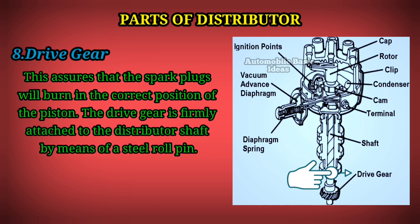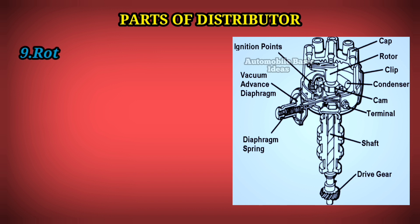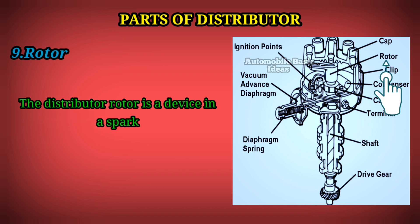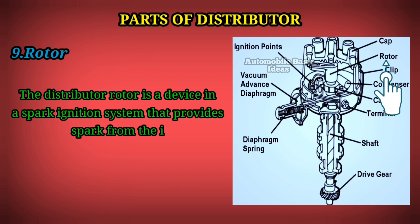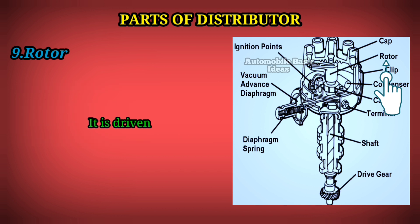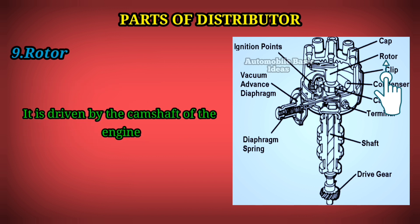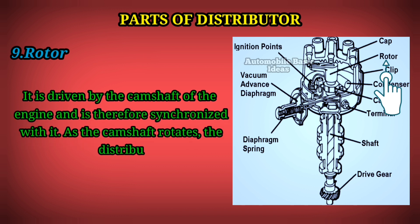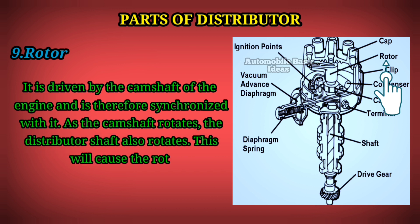9. Rotor: The distributor rotor is a device in a spark ignition system that provides spark from the ignition coil for proper contact inside the distributor cap. It is driven by the camshaft of the engine and is therefore synchronized with it. As the camshaft rotates, the distributor shaft also rotates, causing the rotor attached to the distributor shaft to rotate as well.